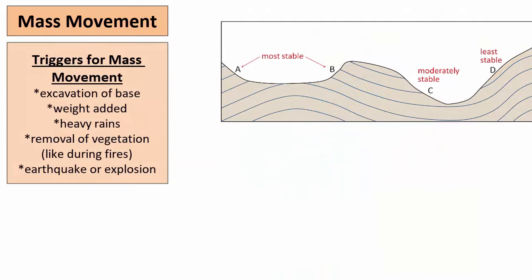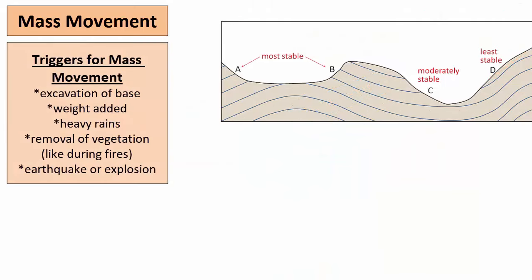What are some triggers that could start mass movement on a susceptible hillside? When the base of a rock bed is excavated it loses its support. Excavation can happen during building of highways or roads or houses or when rivers flood.